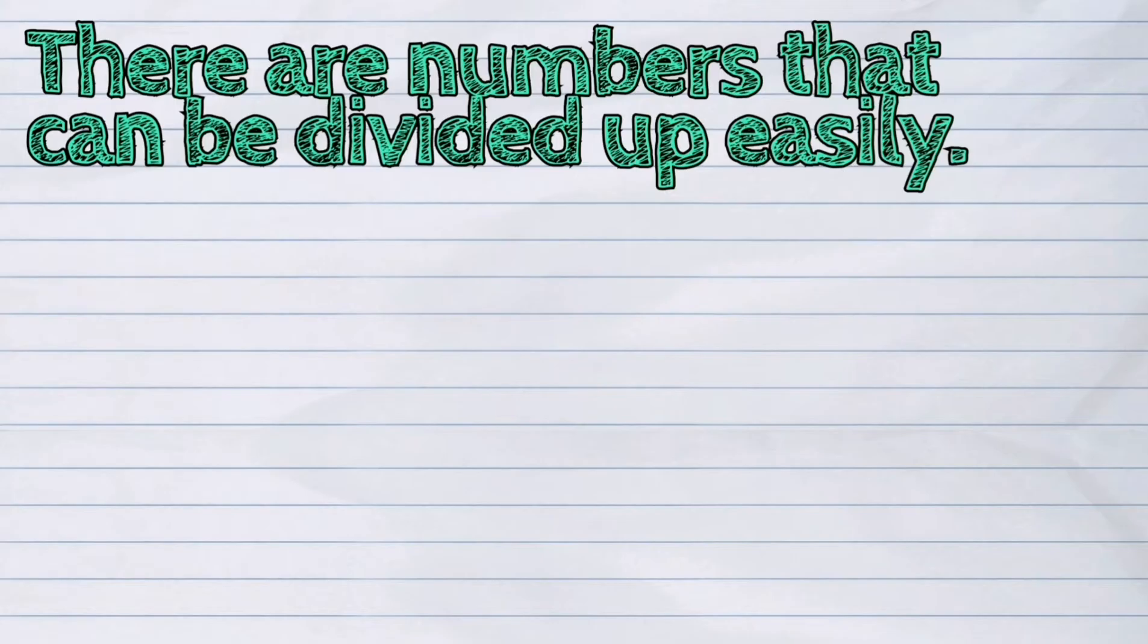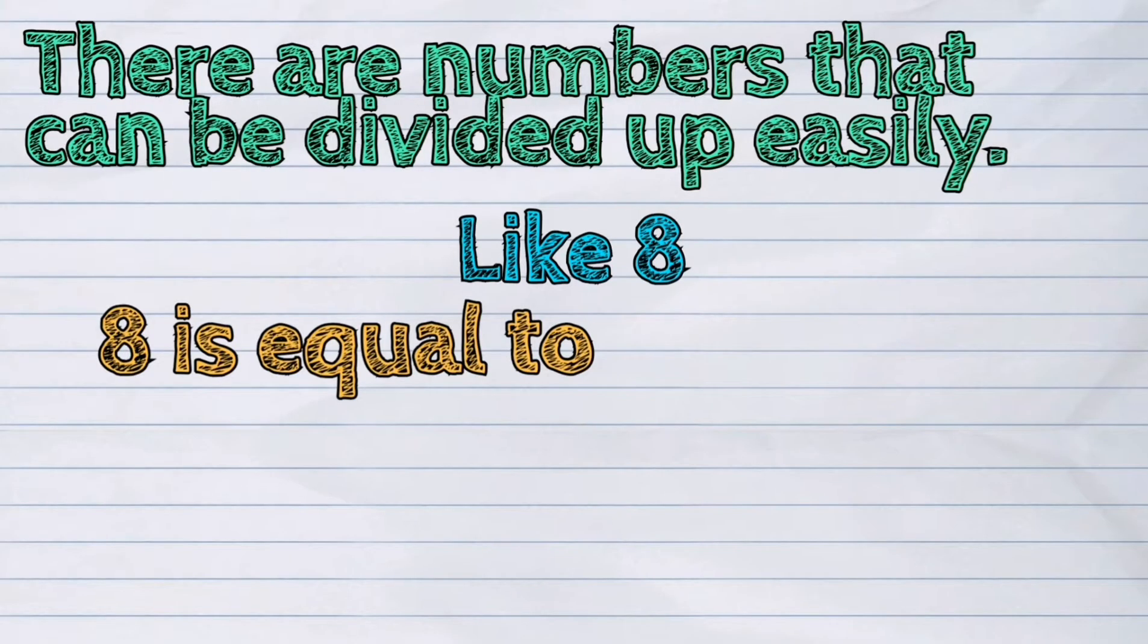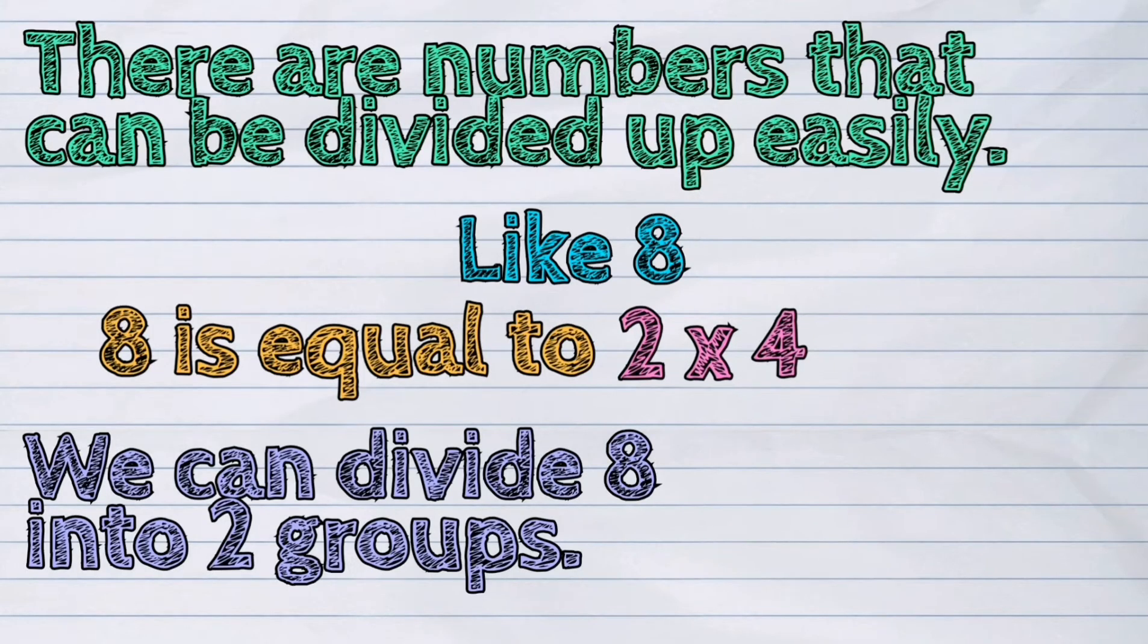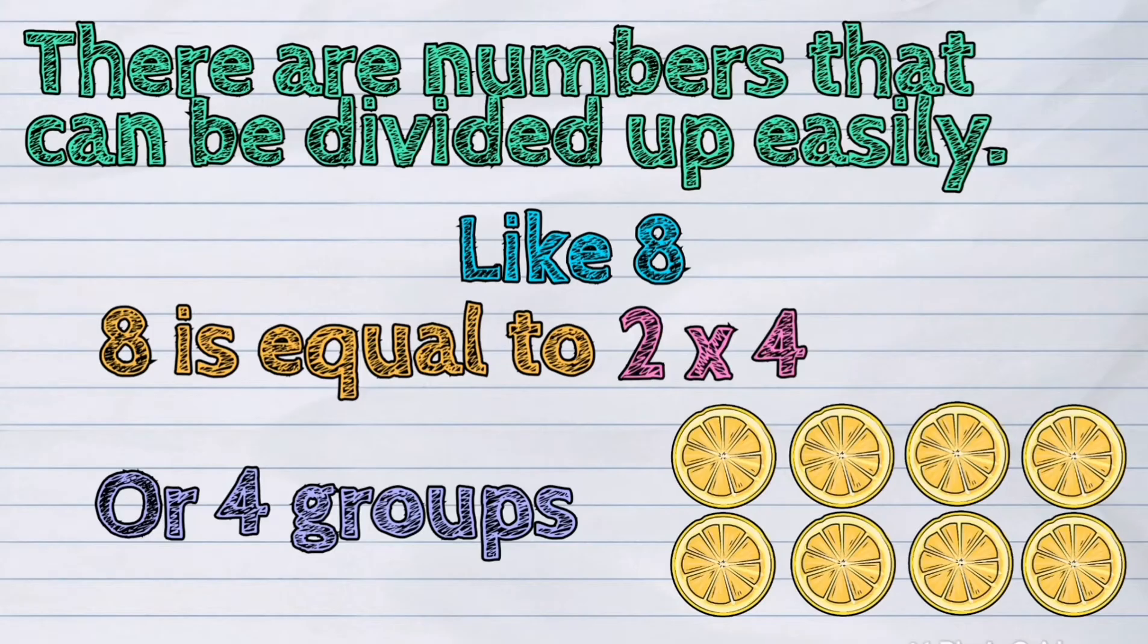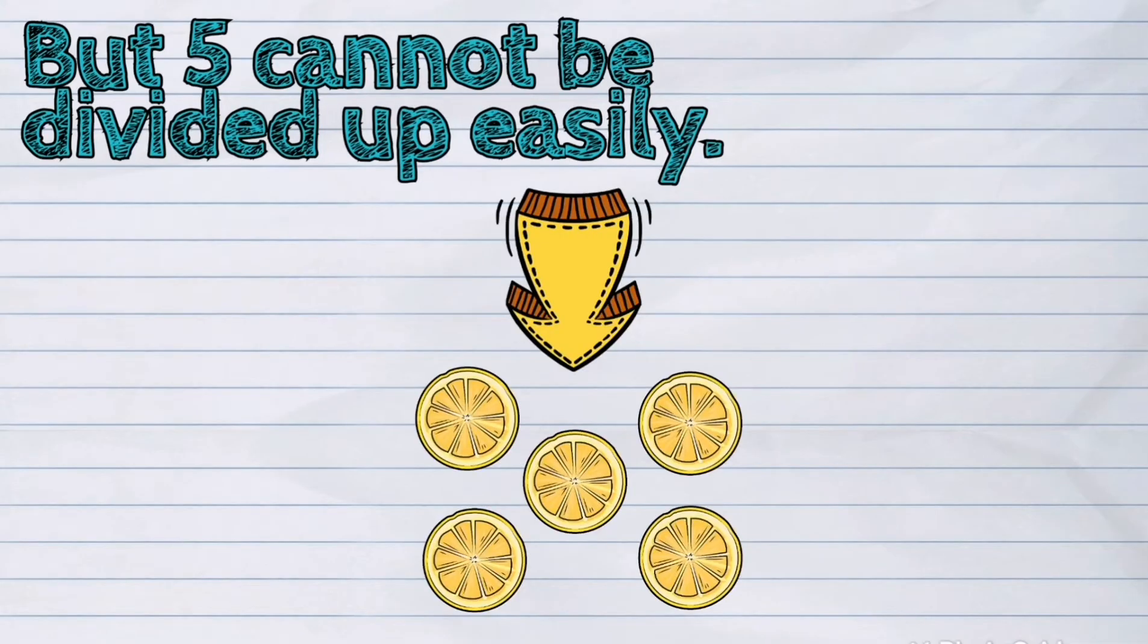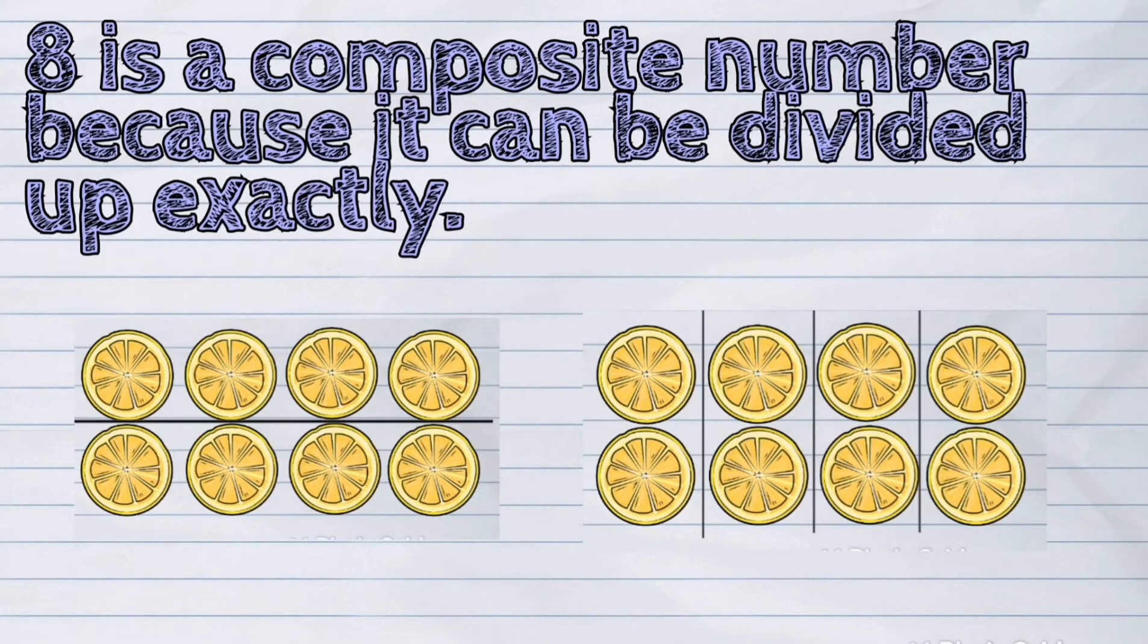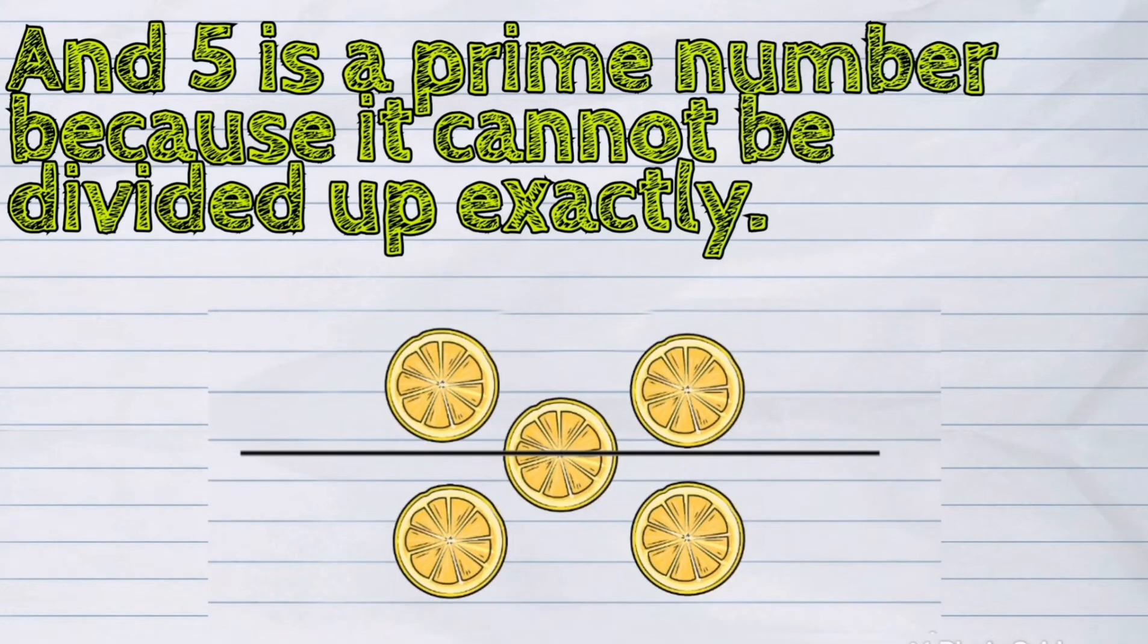There are numbers that can be divided up easily like eight. Eight is equal to two times four. It means we can divide eight into two groups like this, or four groups like this. But five cannot be divided up easily. So based on the given illustrations, eight is a composite number because it can be divided up exactly. And five is a prime number because it cannot be divided up exactly.